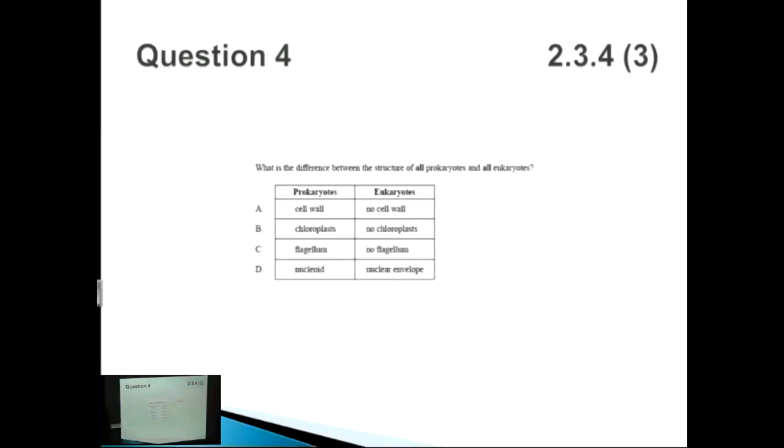Finally, question four. What is the difference between the structure of all prokaryotes and all eukaryotes? Let's look at A. Eukaryotes, no cell wall. Well, eukaryotes actually include plant cells as well. So therefore, this is incorrect.